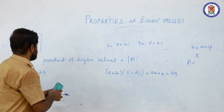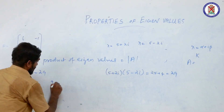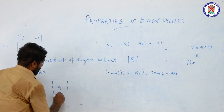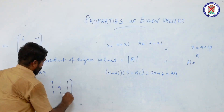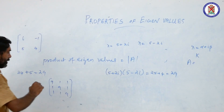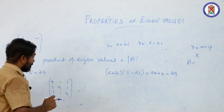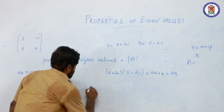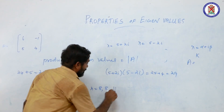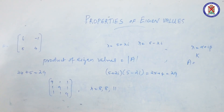Consider another example: the 3×3 matrix with 9s on the diagonal and 1s elsewhere. Its eigenvalues are 8, 8, and 11, as proved in the last class. The determinant is 9(81−1) − 1(9−1) + 1(1−9) = 9×80 − 8 − 8 = 720 − 16 = 704.